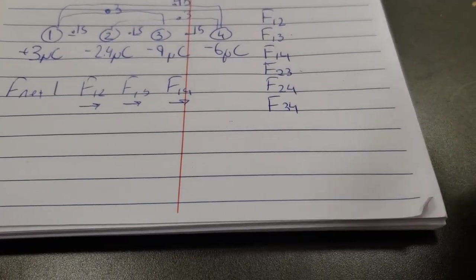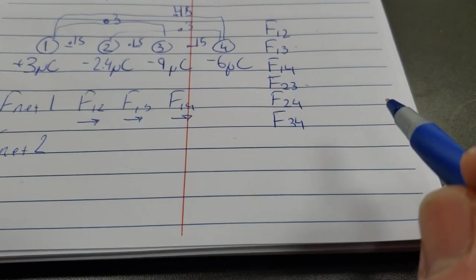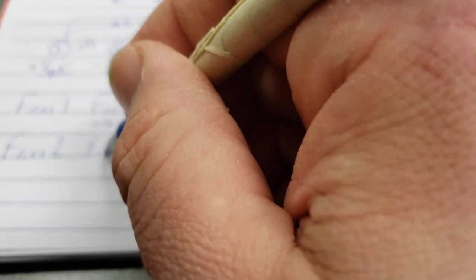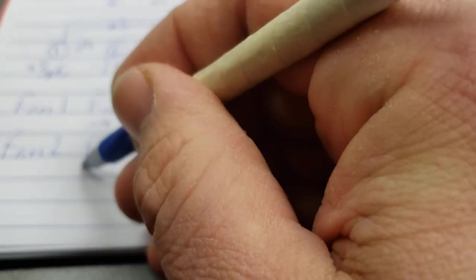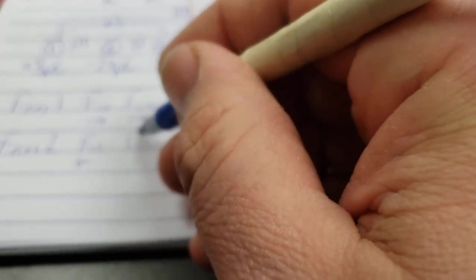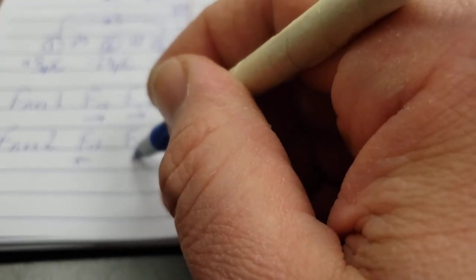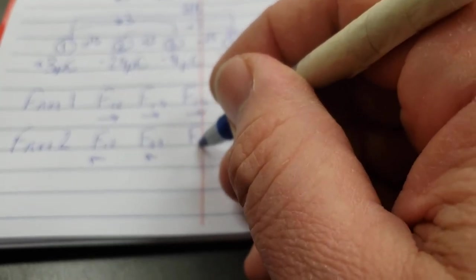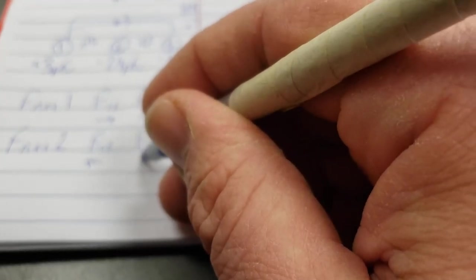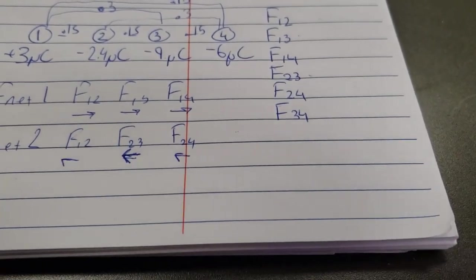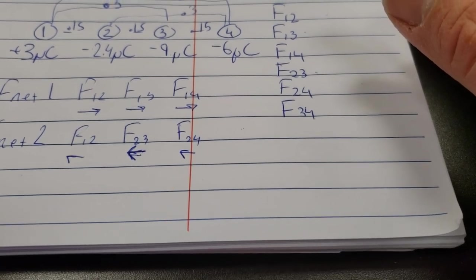Where it gets a little different when you consider one of the middle ones. So force net for number 2. Let's see, force 1, 2, number 1 will be pulling it to the left. Number 3 will be pushing it to the left. Well, that works nicely. 2, 3 is going to push it to the left. And 3, 4, or number 4 will be also pushing it to the left. Force 2, 4 will also push it to the left. Well, that works out nice and neat. And so you can kind of see how the different directions are going to happen.